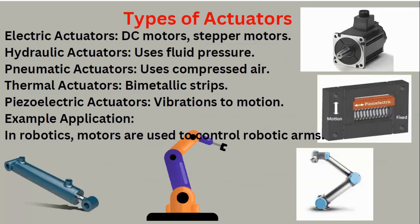Types of actuators: electrical actuators include DC motors and stepper motors. Hydraulic actuators use fluid pressure and are used in big manufacturing industries, car manufacturing, and robotics. Pneumatic actuators are also used for big machines. Thermal actuators use bimetallic strips related to heat. Piezoelectric actuators handle vibration and motion — like the vibrator motor I showed you. In robotics, motors are used to control robotic arms, and you can see pictures of pneumatic, hydraulic, stepper, and DC motor actuators in the slides.